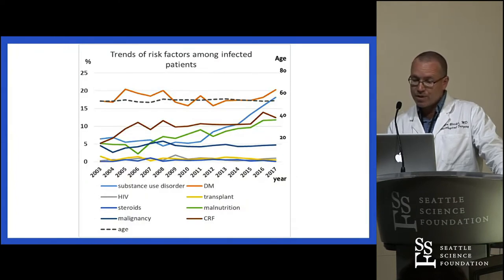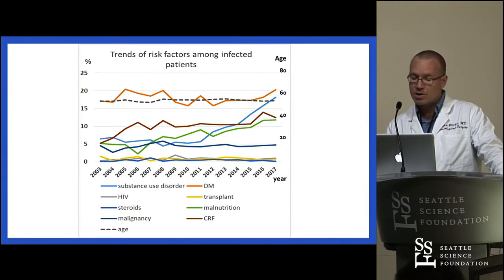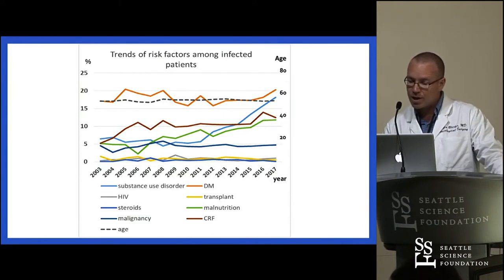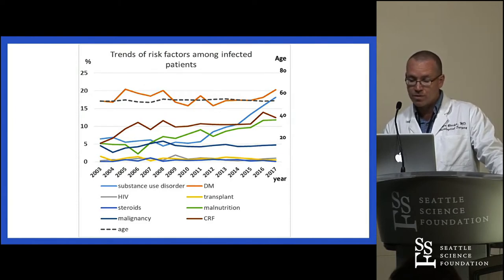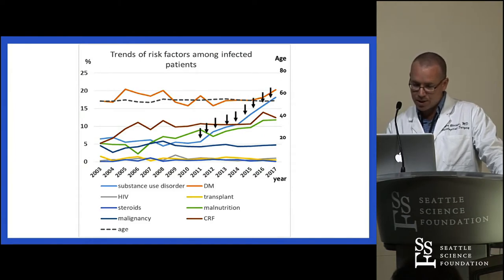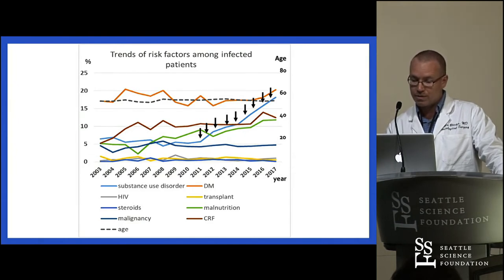Next, we retrieved all known risk factors within the group of patients with spine infections to see how this group may have changed throughout the years. The results show that while the incidence of most risk factors remained relatively unchanged, the proportion of drug abuse and dependence had increased dramatically during the same time window, beginning in 2011.